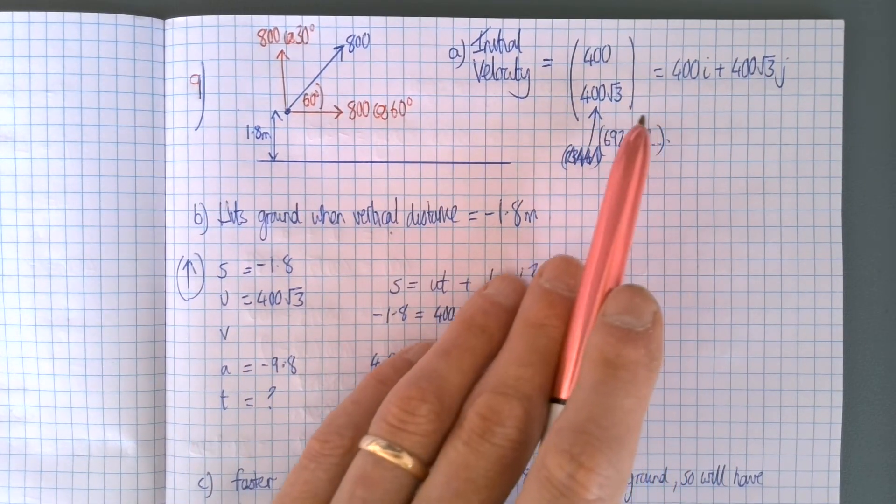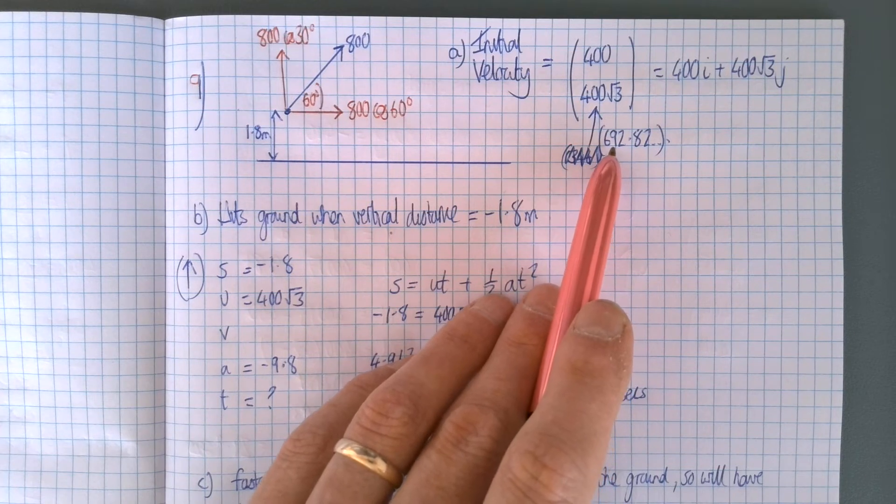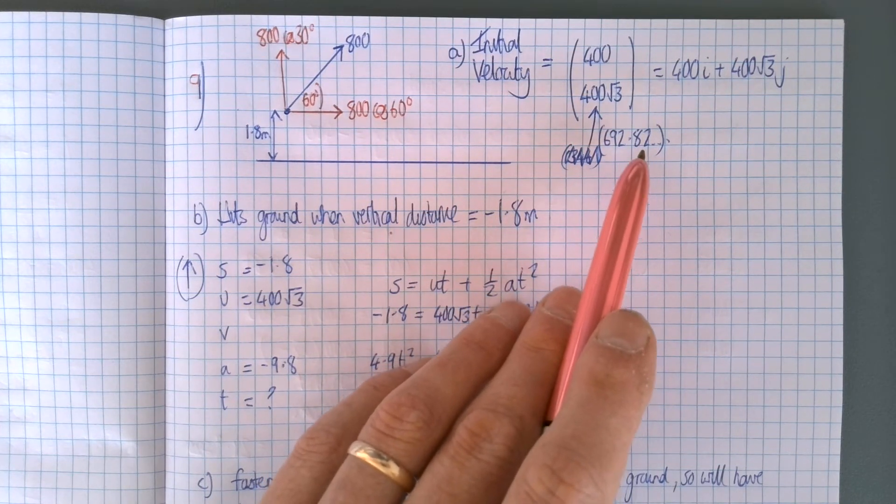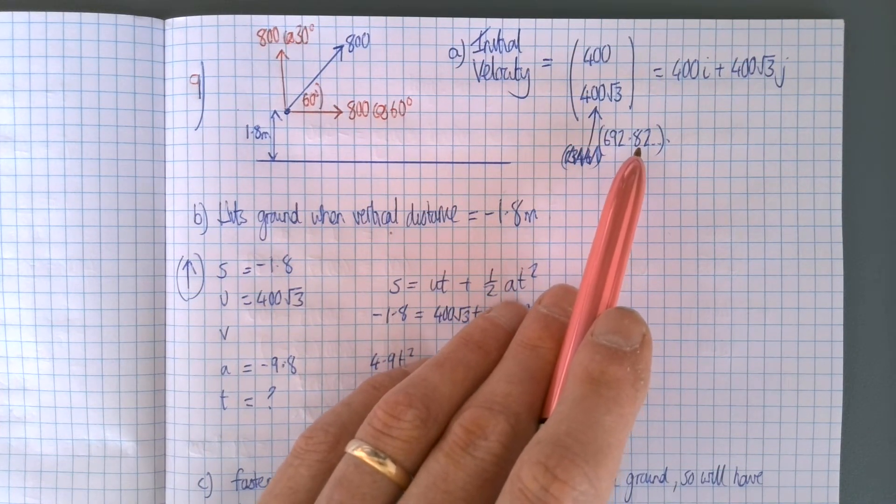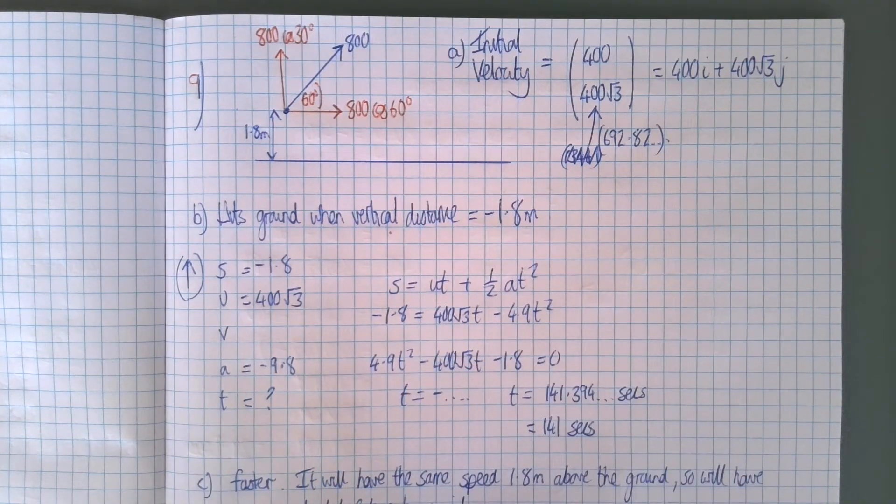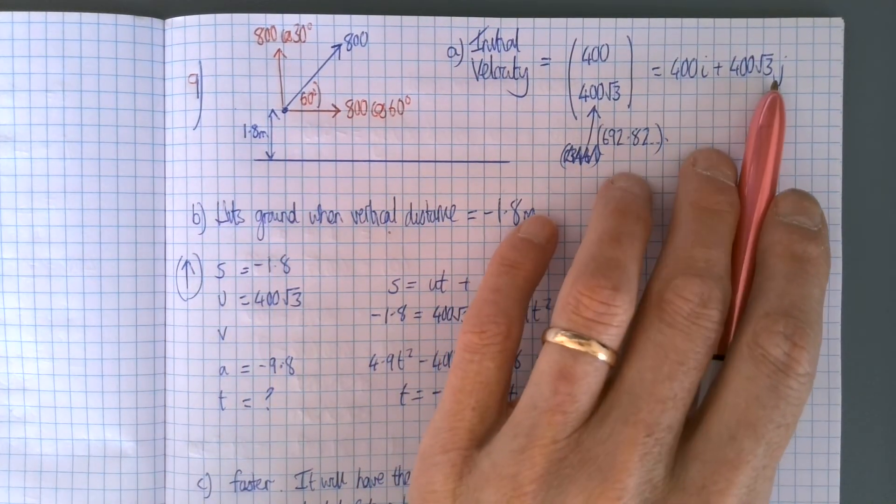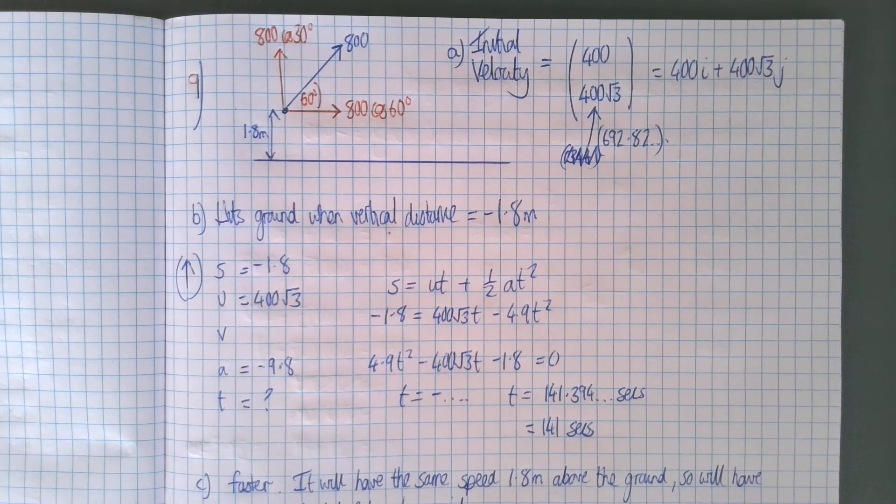Hopefully if you did it as 692, you stored the exact value and used the exact value because you needed it several times in the rest of the question. Anyway, that was what they wanted, the velocity in vector form.